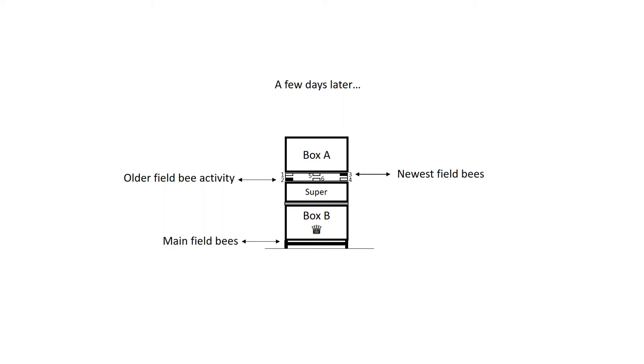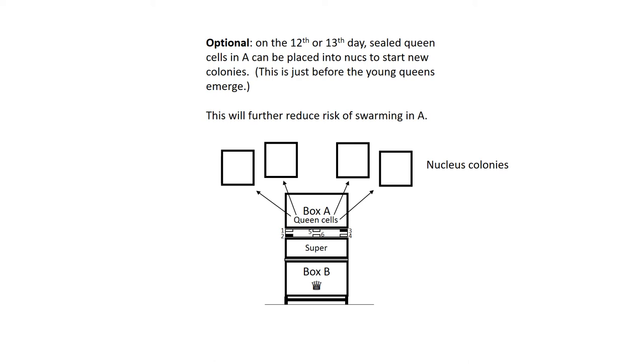Optional. On the twelfth or thirteenth day, sealed queen cells in A can be placed into nukes to start new colonies. This is just before the young queens emerge. This will further reduce risk of swarming in A.